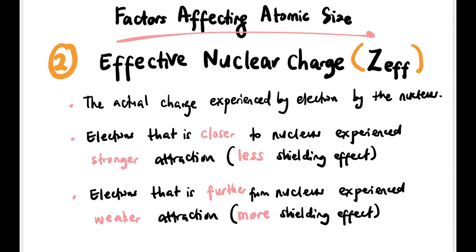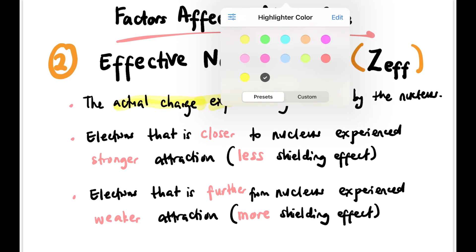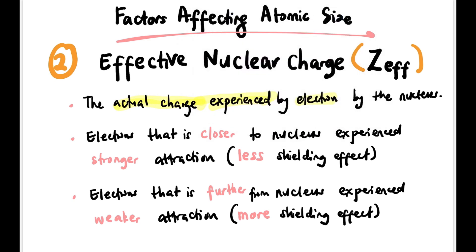The second factor is effective nuclear charge, or Zeff. Zeff is the actual charge experienced by an electron from the nucleus. Electrons closer to the nucleus experience stronger attraction because of less shielding effect, while those farther from the nucleus experience weaker attraction due to more shielding effects.